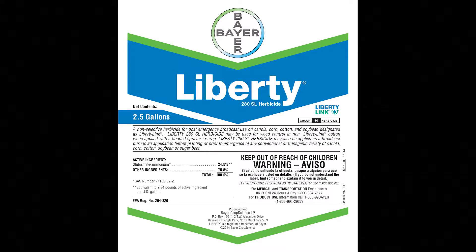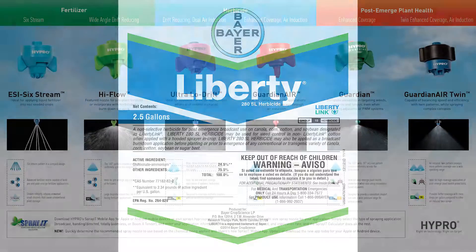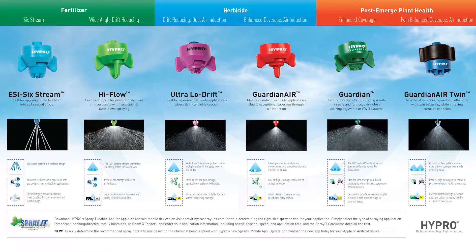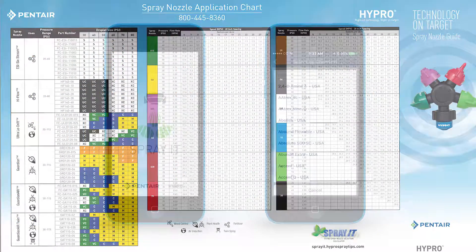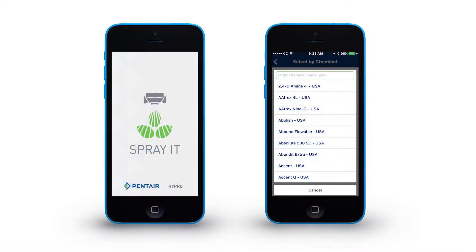First, you would need to acquire the chemical label. Next, you would need one of our guides to help you determine which nozzle to select. In this example we will use the spray nozzle guide form 476. There are also other options such as the Spray It app and the Spray It calculator via the web to assist you in this process.